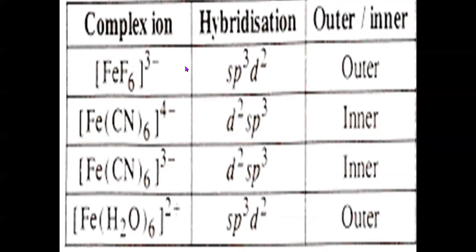In the next part, we will discuss the other shapes of complexes. Today we have discussed in detail about the shape of molecules of complexes which is octahedral, as part of the Valence Bond Theory. Let us stop here for today.